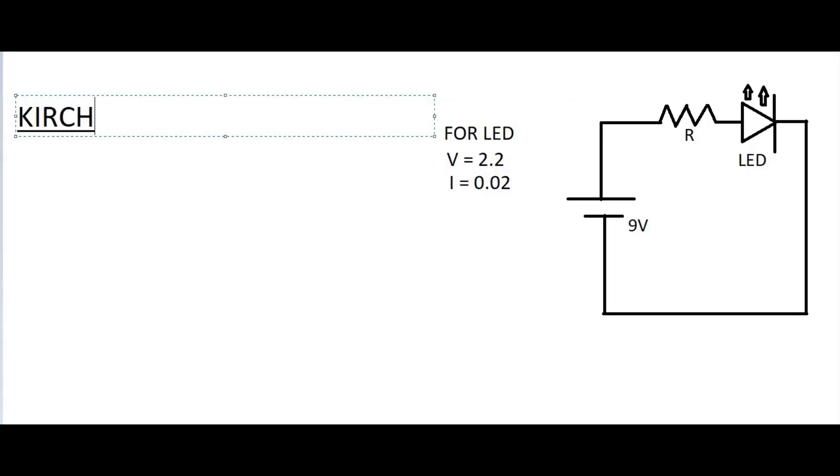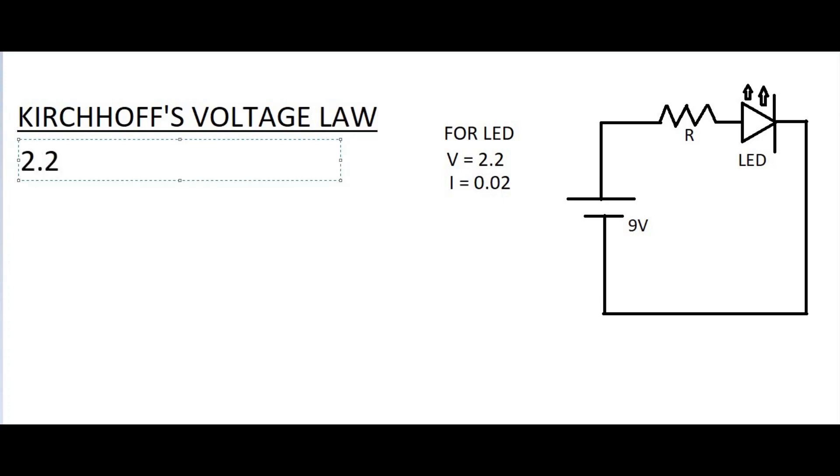Kirchhoff's voltage law says the total voltage around the loop is equal to the sum of all the voltage drops within the same loop. LED's forward voltage plus voltage drop across resistor is equal to the supply voltage.